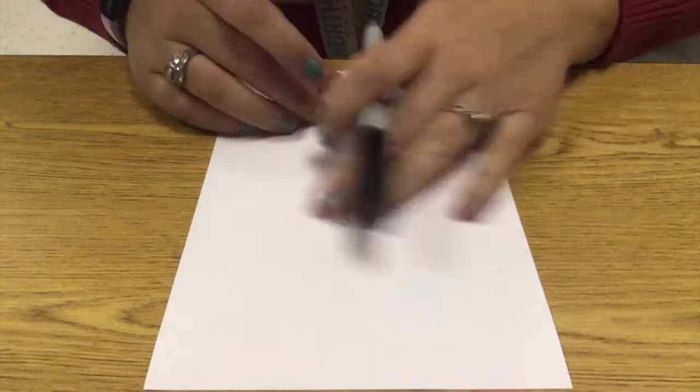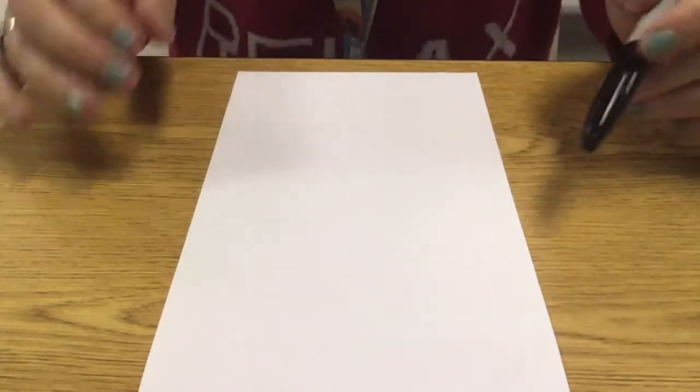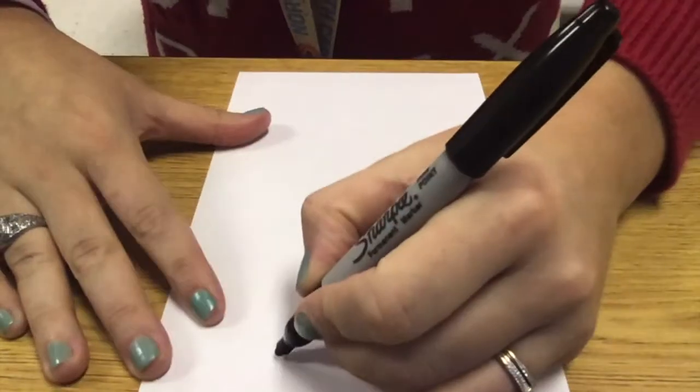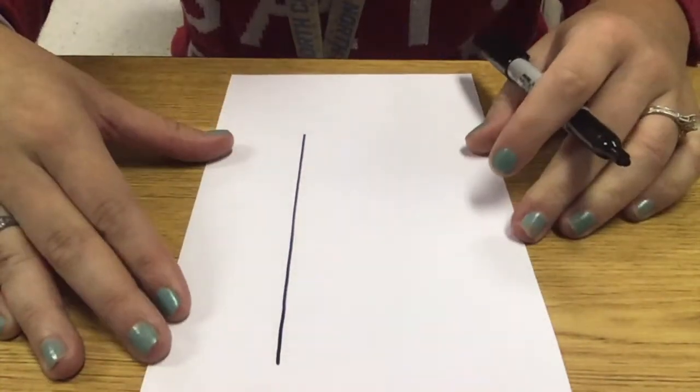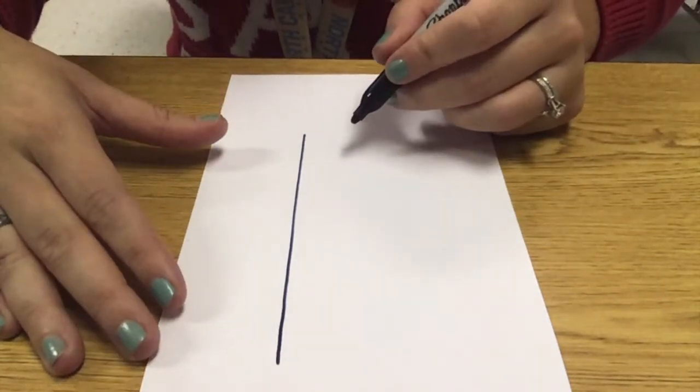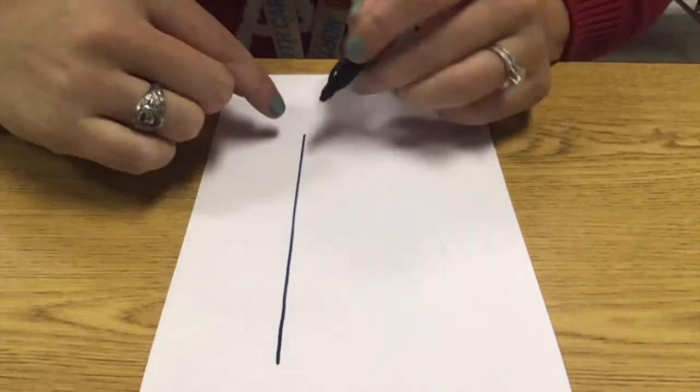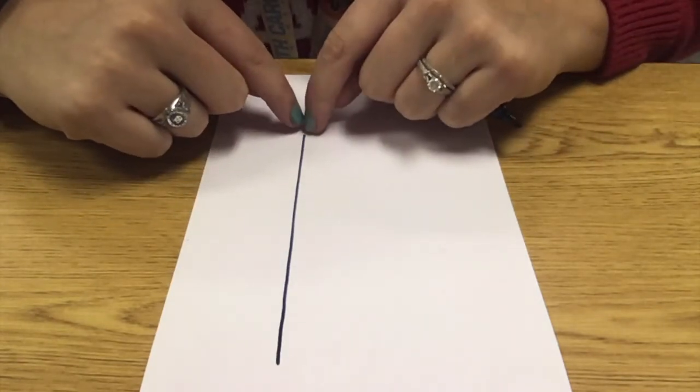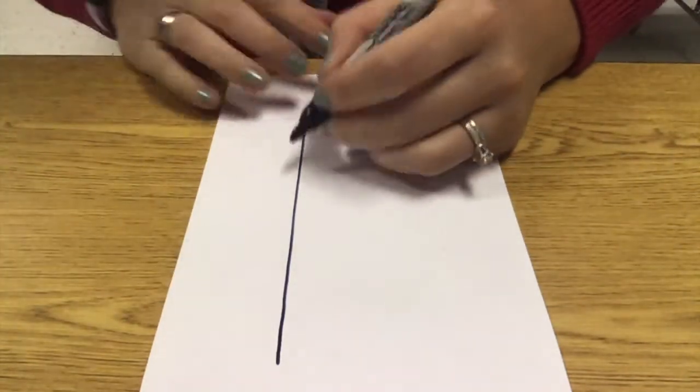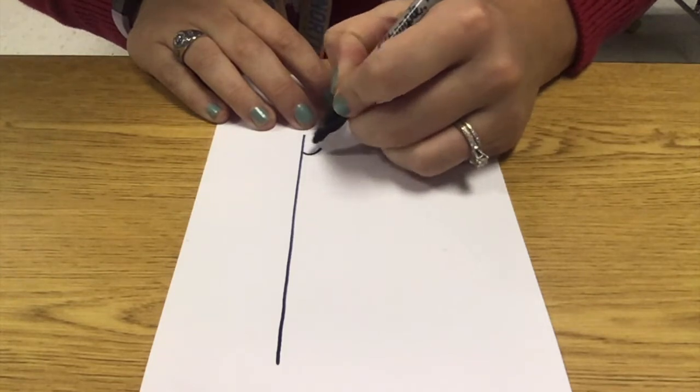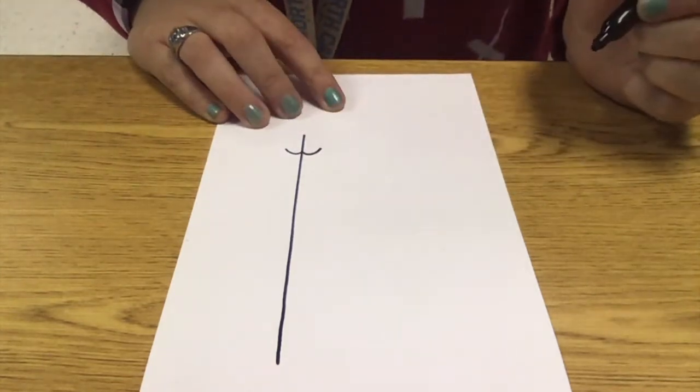First thing we're going to do is we're going to draw a couple of very simple trees. Now you do not have to do this type of tree. If you want to do something a little different, that's fine, but I like how these looked. So what I'm going to do is I'm going to make myself a nice tall line on my paper, and I'm going to give it a couple of branches. Now the branches for this type of tree are going to be smaller near the top, and they're going to get bigger as it goes down. So when I do this, I'm going to start near the top. I'm going to make two little curved lines off of the top.